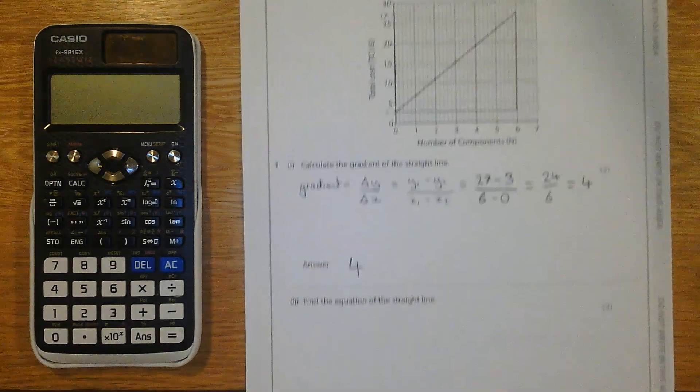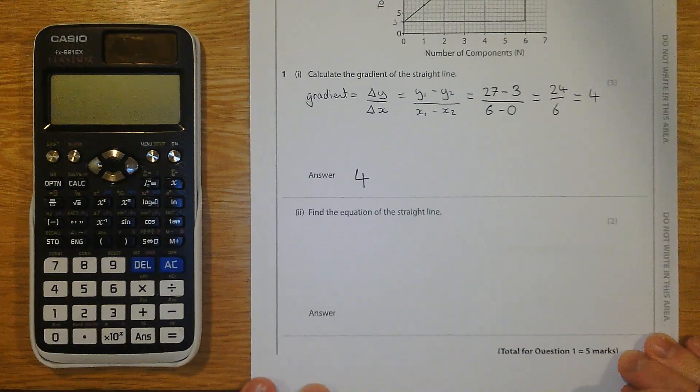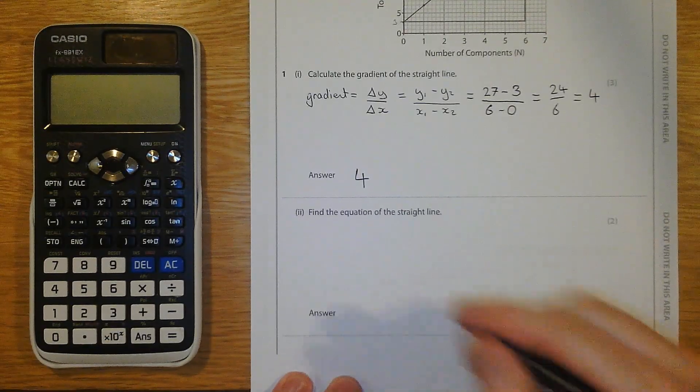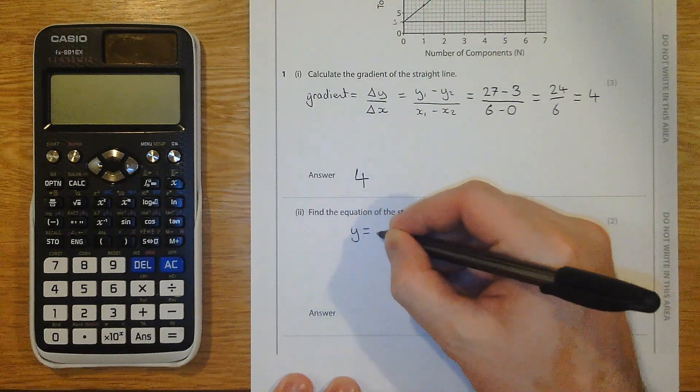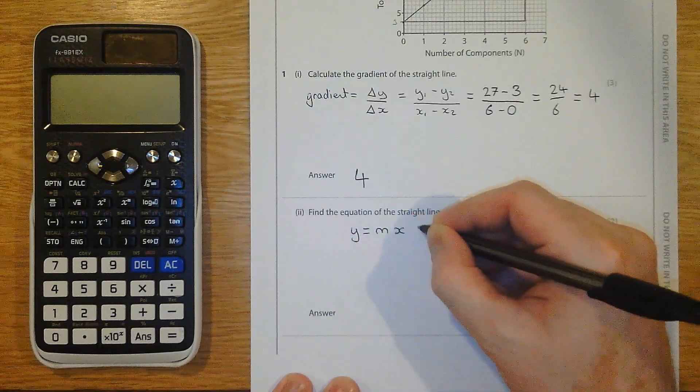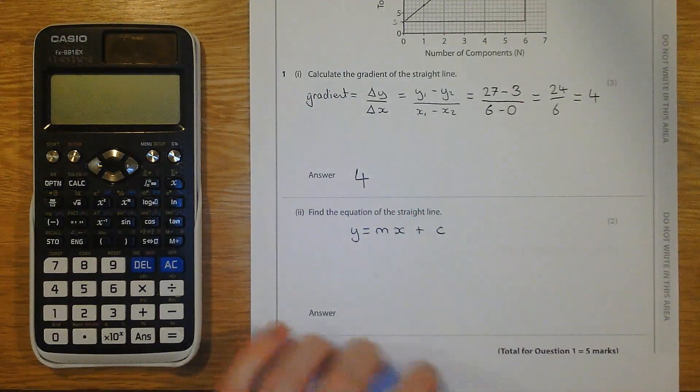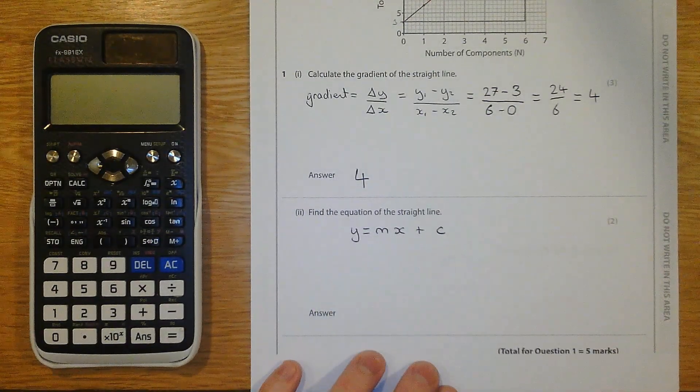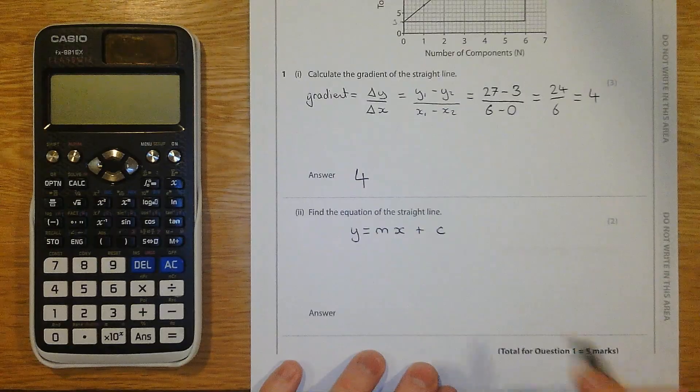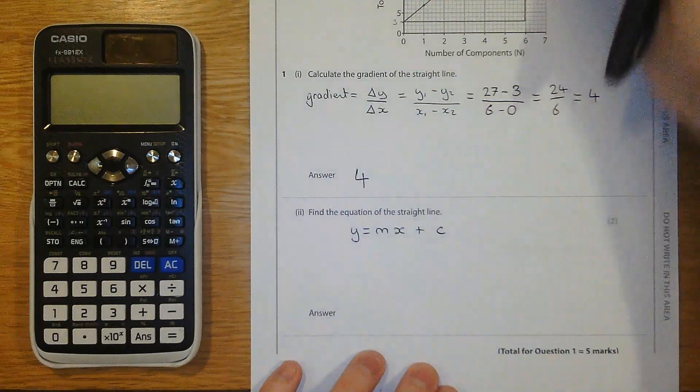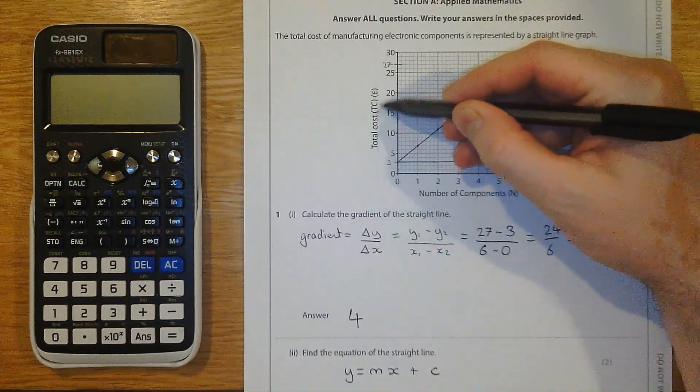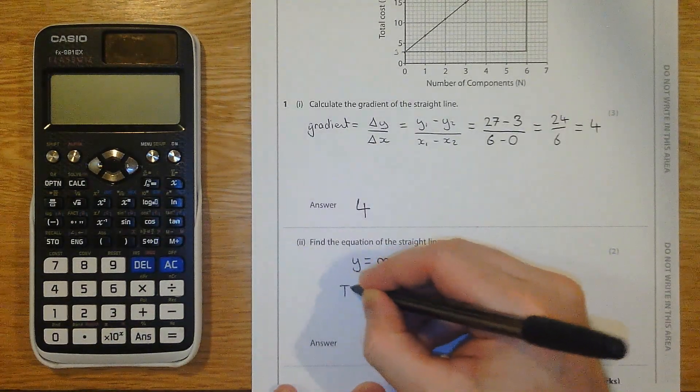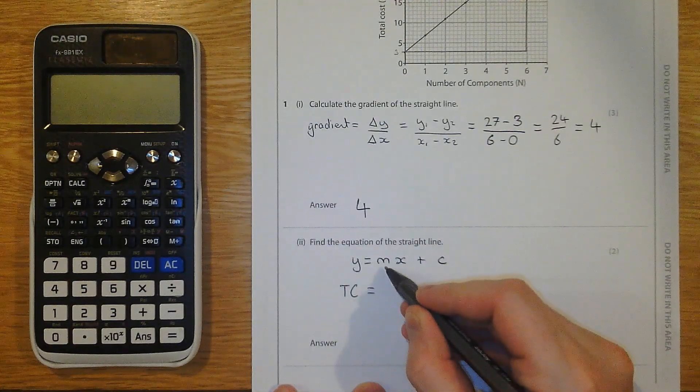I'm now asked, in part 2, to find the equation of the straight line. The first thing I'm going to do is write down the format y equals mx plus c. Even knowing that might be enough for a mark sometimes, if you write it down. So let's have a look at what we've got. y, that's our vertical axis. And that's TC total cost. So TC. m is the gradient, I've got that here, so that's 4.